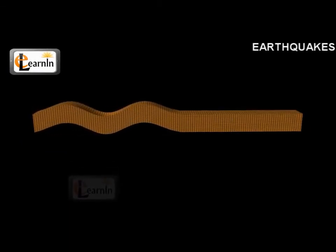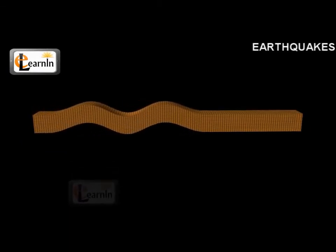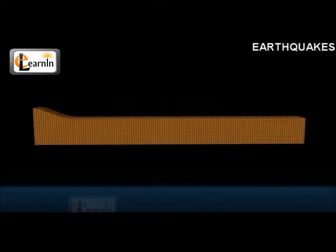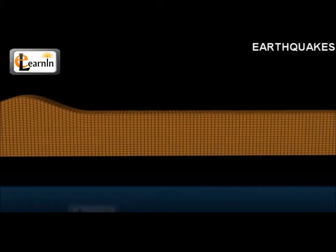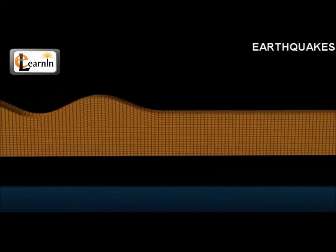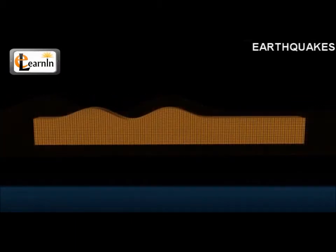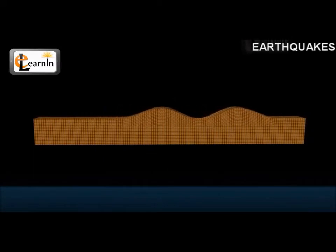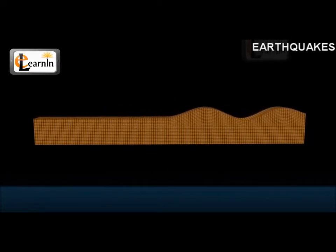When P and S waves reach the surface of the Earth, they get converted into L waves — long waves that travel along the surface, vibrating horizontally at right angles to the direction of the waves, called love waves or Rayleigh waves.